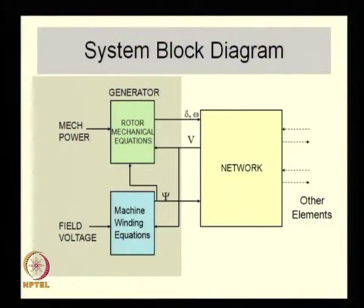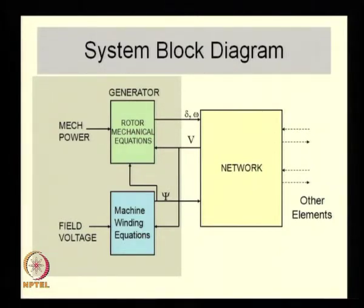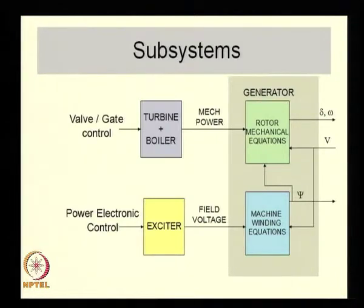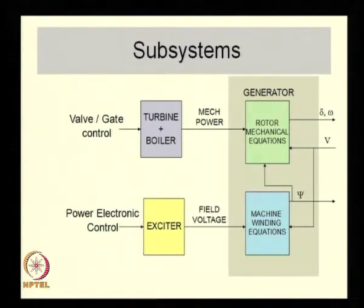Whatever we have learnt so far should allow us to get a good idea of at least some of the major stability phenomena in power systems. Coming back to the remnant issues in our study, we have been talking of the mechanical power subsystems. If you look at the system block diagram of a generator connected to a network, you find two major inputs: mechanical power and field voltage.